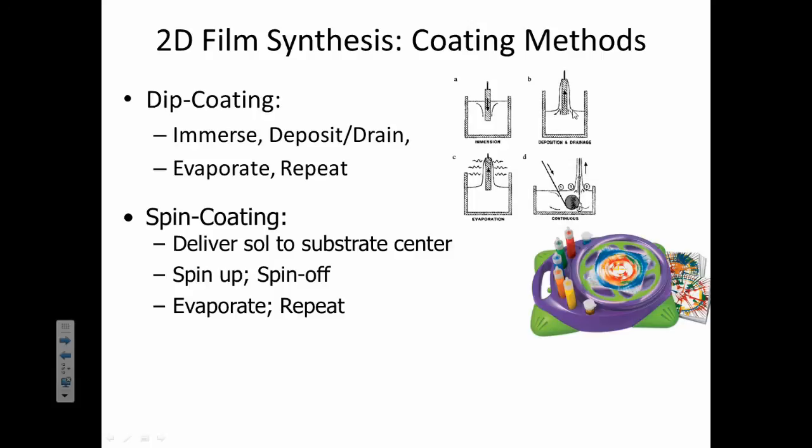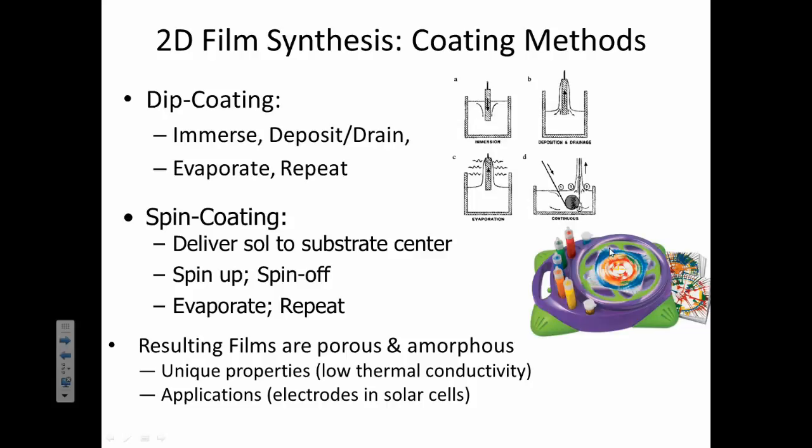There's also spin coating, which I always compare to, like, a Gravitron ride at a carnival or something like that. But basically what you can do is you can spin something, kind of like that toy where you can drop the little drops of paint, and the paint will splatter and create this thin layer as it spins. You can do that with chemicals, too. As you can imagine, that might not be the most precise thin layer, but it works. It's kind of a rough way to do that.